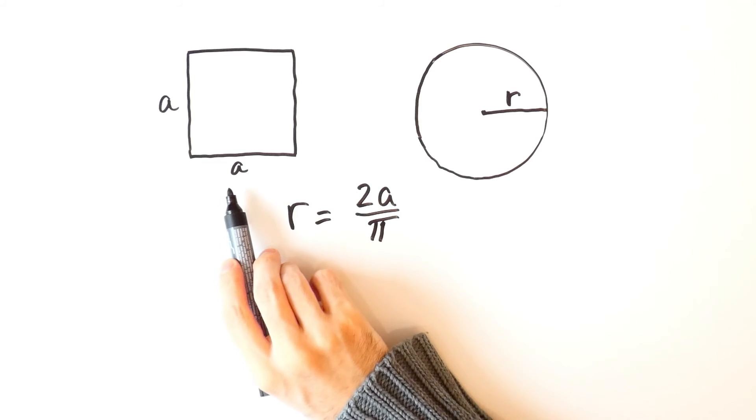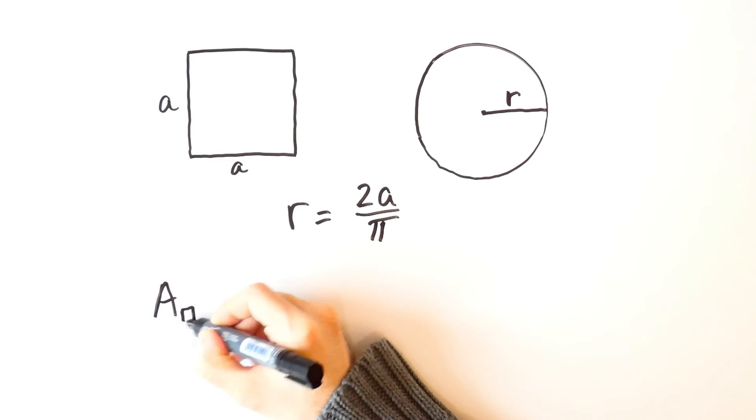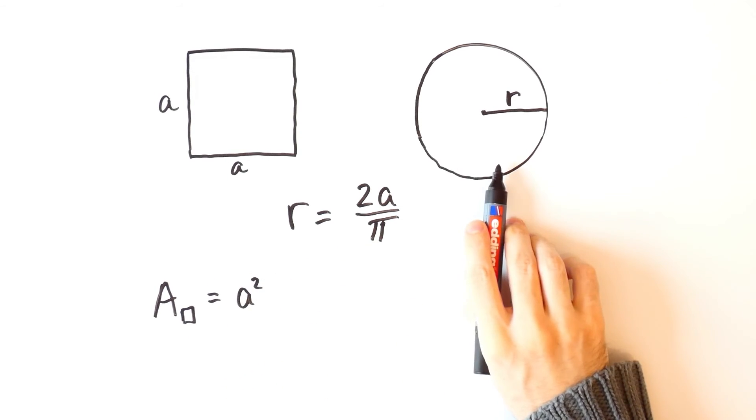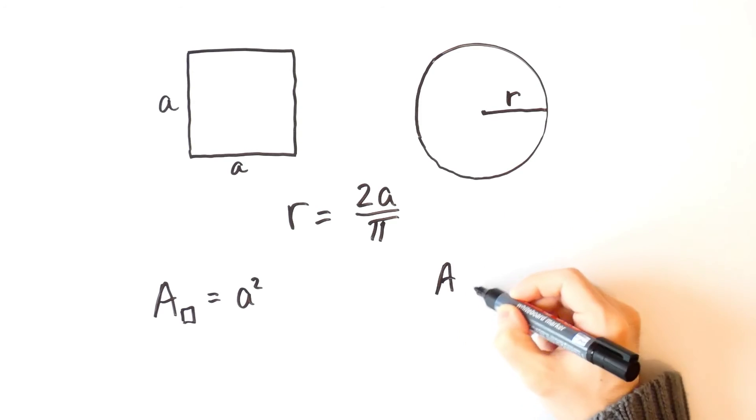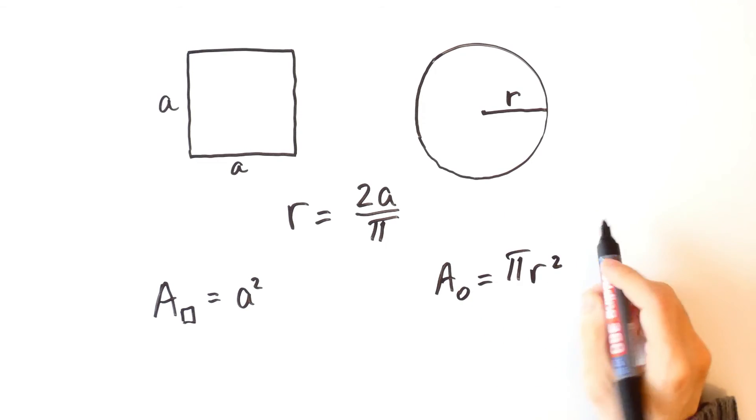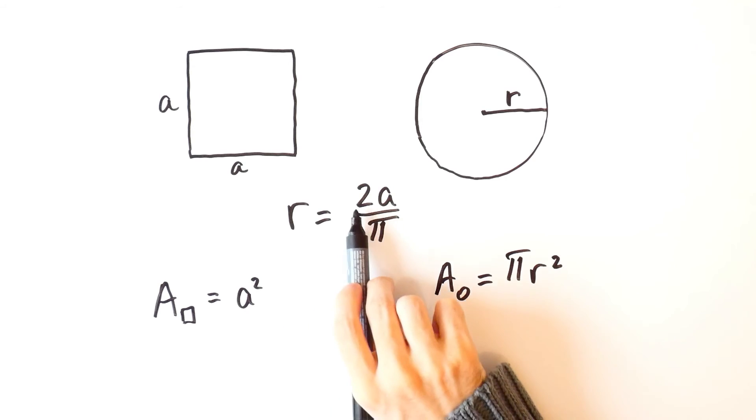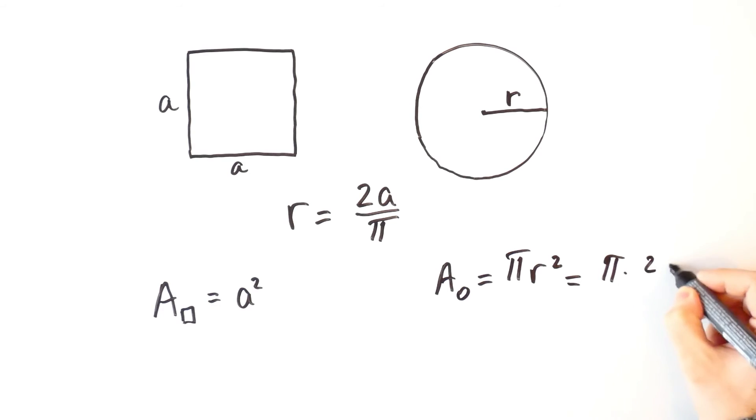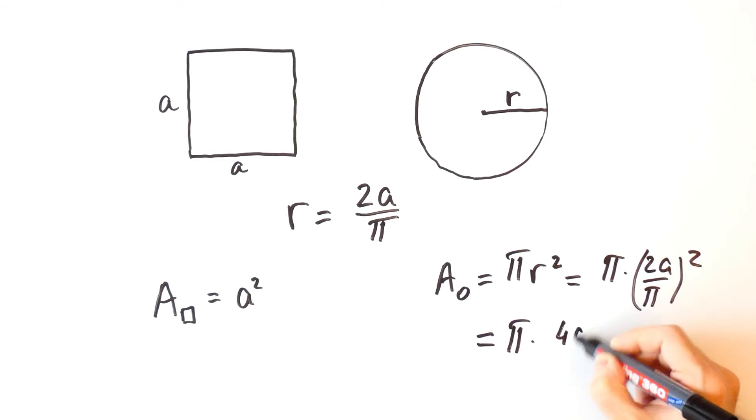Now, the area of the square is equal to a squared and the area of the circle is equal to pi r squared. But r is equal to 2a over pi, so this is equal to pi times 2a over pi squared, which is equal to pi times 4a squared over pi squared, and that is equal to 4a squared over pi.